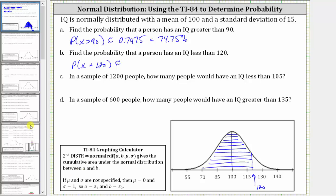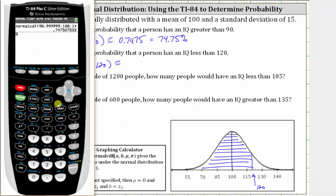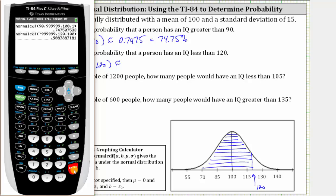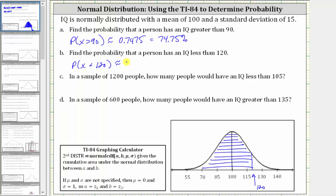Going back to the calculator, we press second, vars, and then number two for the normal cumulative density function. We have to exaggerate the lower bound or left bound, so we enter negative 999999. Enter. The upper bound or right bound is 120. Enter. Everything else remains the same, so we go down to paste, press enter, and then enter again. To four decimal places, the probability is approximately 0.9088, which is 90.88%.